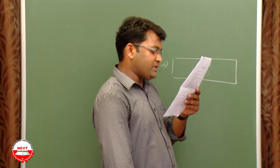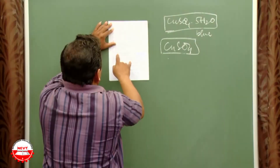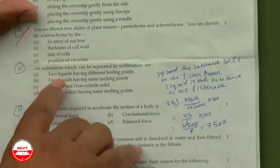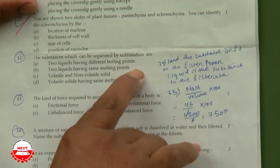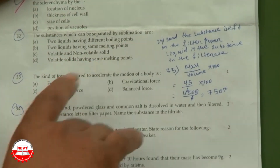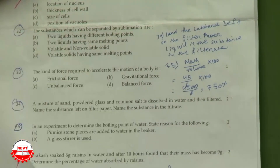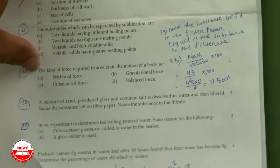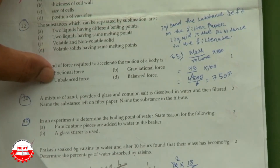To identify sclerenchyma from two slides of plant tissue (parenchyma vs. sclerenchyma), use the thickness of the cell wall. Question 32: substances separated by sublimation — volatile and non-volatile solids is the answer. Question 33: the kind of force required to accelerate the motion of a body is unbalanced force.